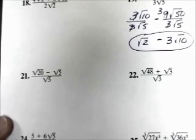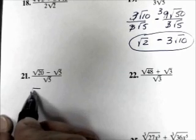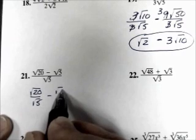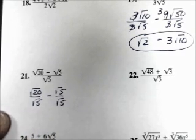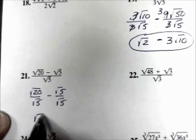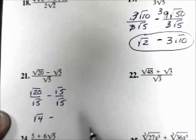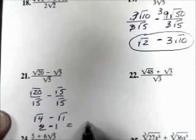Number 21. We're going to divide each term of the numerator by the denominator. Square root of 20 divided by square root of 5, minus square root of 5 divided by square root of 5. Square root of 20 divided by square root of 5 is square root of 4. Minus square root of 5 divided by square root of 5 is square root of 1. These are both perfect squares, so this is 2 minus 1, which is 1.